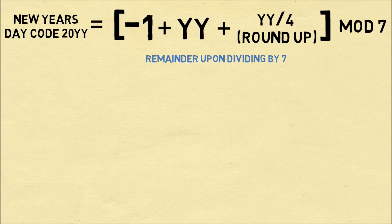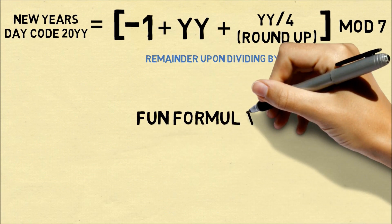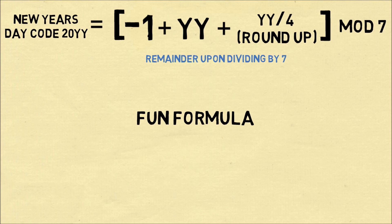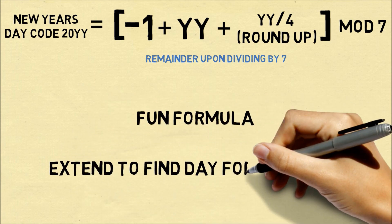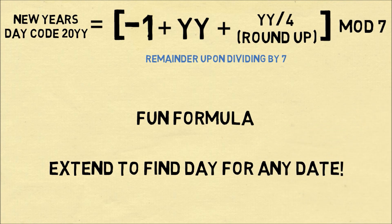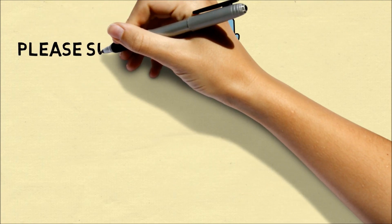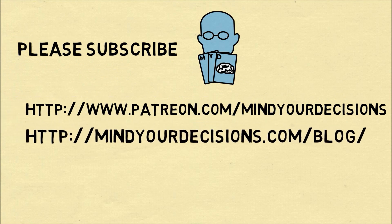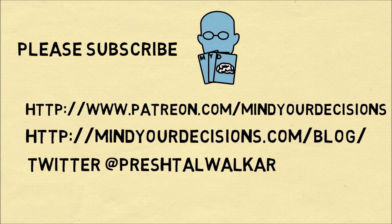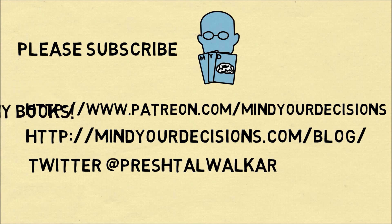So this formula is something that you can use. It's actually a pretty fun formula. You can take any year from 2000 and 2099 and figure out when the new year started. And once you know this trick, you can actually extend it to find the day of any date. And if you're interested, I'll make a future video on that. I hope you like this video. Please subscribe to my channel. You can support me on Patreon. Catch me on my blog, Mind Your Decisions. On Twitter at PreshTalwalker. And you can get my books listed on my website. Thank you, everybody.